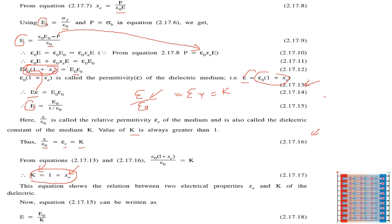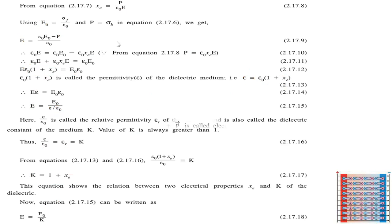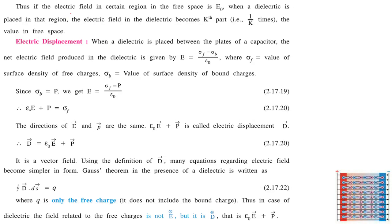So the electric field inside a dielectric region is E = E₀ / k. When a dielectric is placed in a region where the free-space field is E₀, the electric field inside the dielectric becomes 1/k times the value in free space.